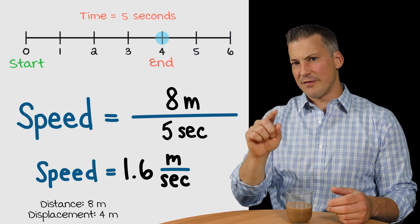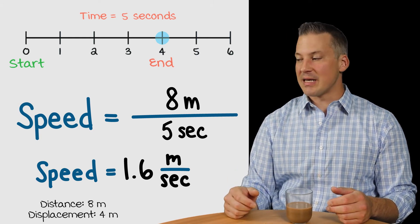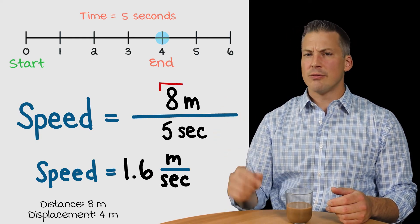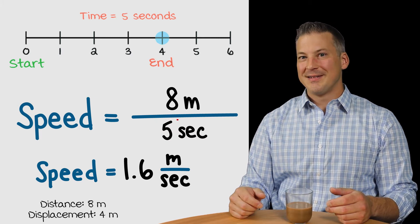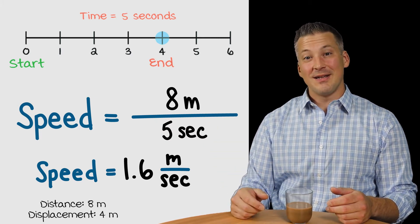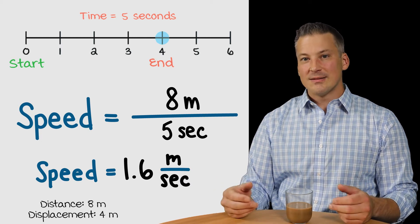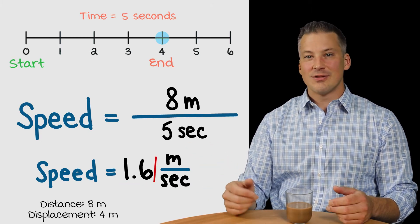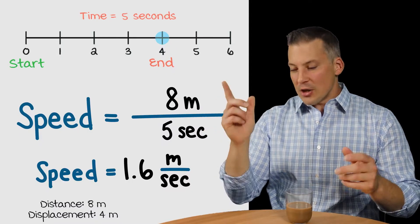Now, it turns out that some keen observers out there might be saying, well, don't you only have one significant figure in the distance and the time? Yes. Should the answer have one significant figure? Yes. But who cares? I don't. So, moving on.